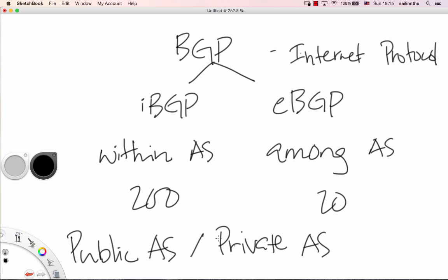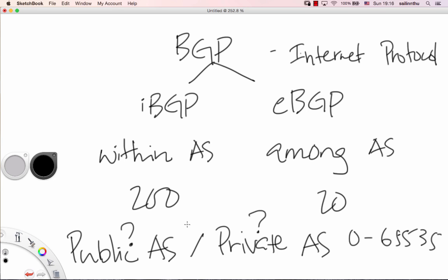The autonomous system number range goes up to 65535. Private autonomous system numbers have their own range. This sets up the foundational knowledge needed before we proceed with BGP configuration.